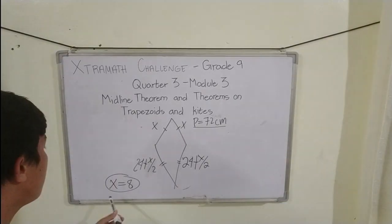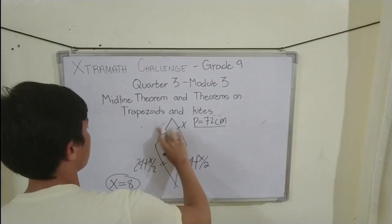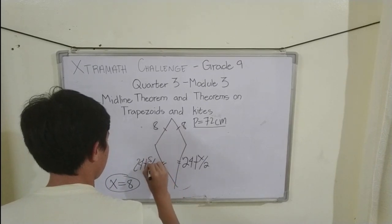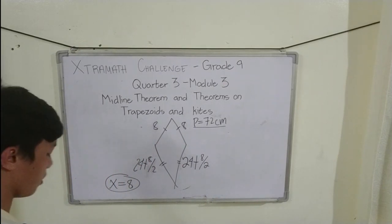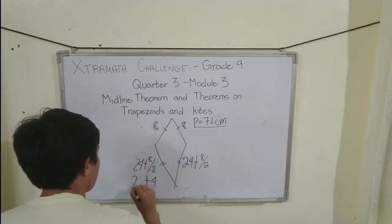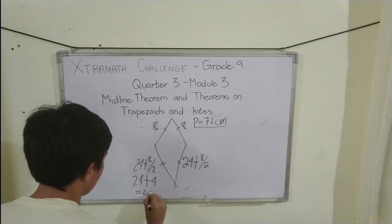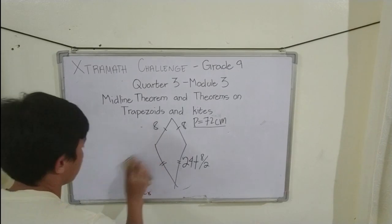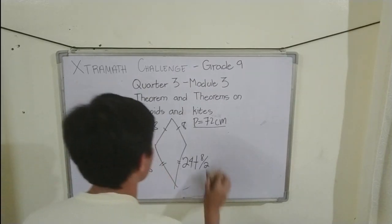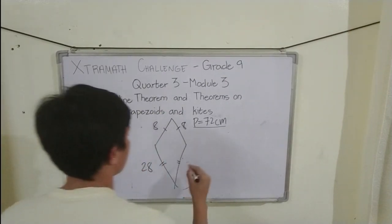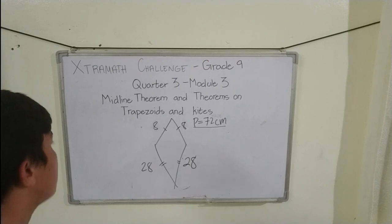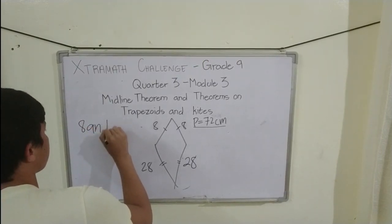Now that we have the value of x, we substitute it into each side. For the side 24 plus x over 2: x over 2 equals 8 over 2 equals 4, and 24 plus 4 equals 28. So this side is equal to 28, and since they are congruent, this side is also 28. The length of each side of the kite is equal to 8 and 28.